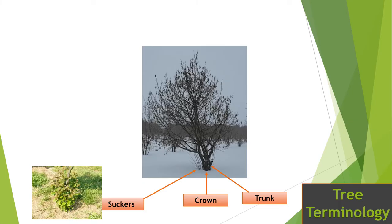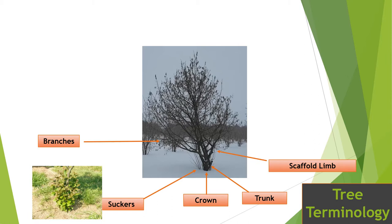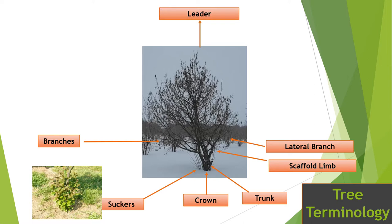Continuing with tree terminology and structure — the branches are where we do the bulk of our pest monitoring. We often refer to scaffold limbs, which are the main branches that form the structure or framework of the tree. Lateral branches come off of another branch, often at a more horizontal angle to the scaffold limb. Leaders are the upper portion of growth, and you can have one or more leaders on a tree depending on how it's trained.